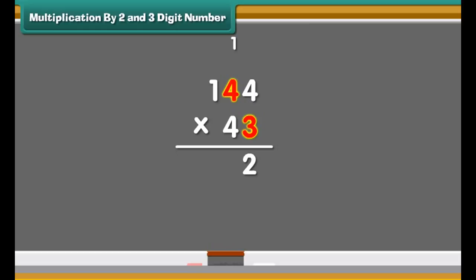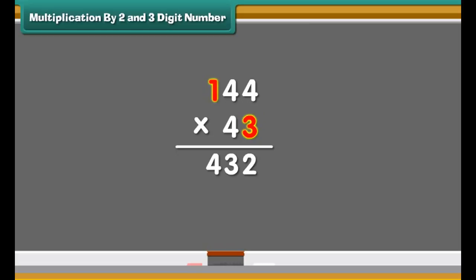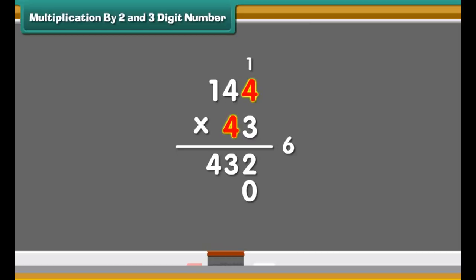Let us multiply 144 by 43. Start multiplication from the 1's place. 3 times 4 are 12. Write 2 in the 1's place and carry the 1 forward to the 10's place. Multiply 3 by the number in the 10's place — that is 4 — equals 12. Add 1 which was carried forward, equal to 13. Write 3 in the 10's place and carry 1 forward to the 100's place. Multiply 3 with the number in the 100's place and add 1 carried forward. Write 4 in the 100's place.